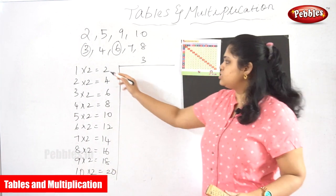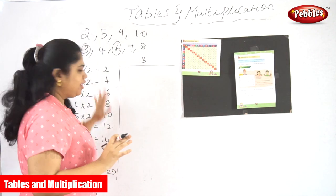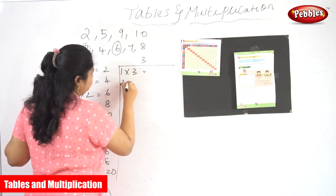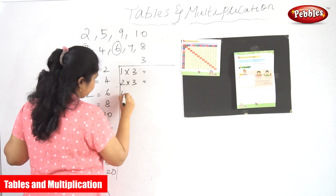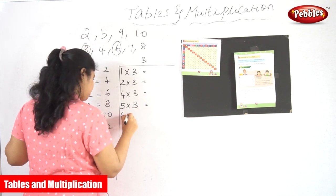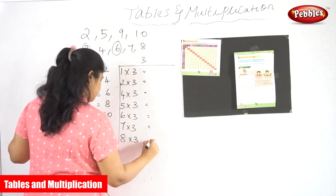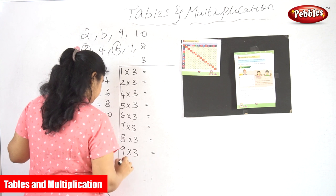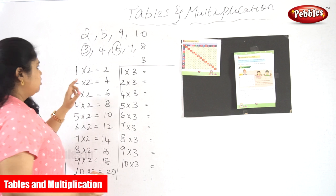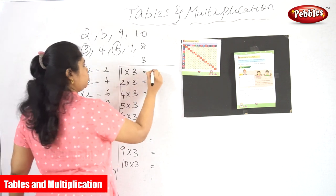Okay, so this is the second table I've written. Now we are going to learn about the third table. This is for a reference I've written — see here. Now I'm writing only the questions. 1 into 2 is equal to 2, so similarly 1 into 3 is equal to 3.